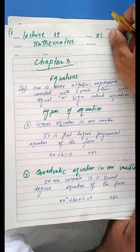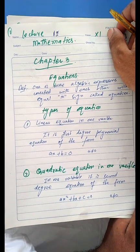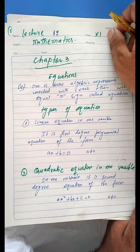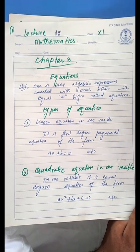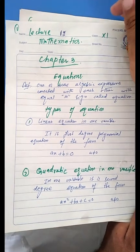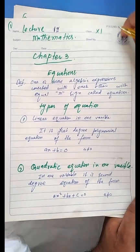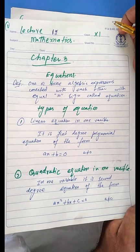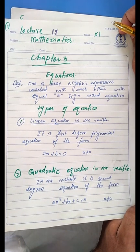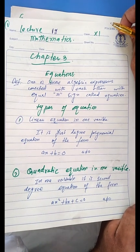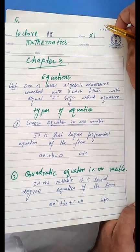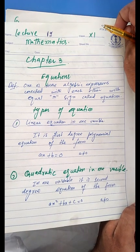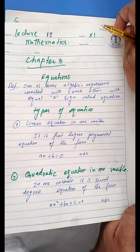In chapter three we will study equations — what is an equation, how we define equations, and what are the different kinds or types of equations. So let's begin. The definition of an equation: one or more algebraic expressions connected with each other with an equal sign is called an equation.